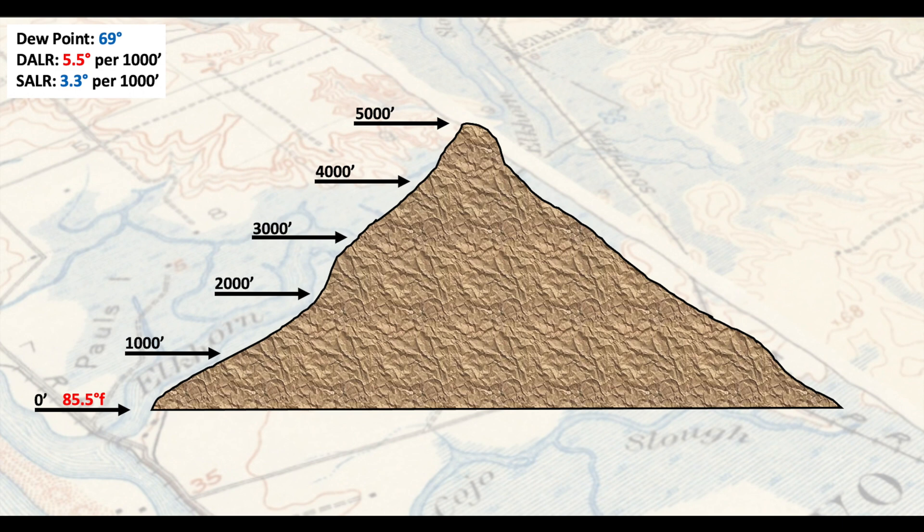The first thing we can observe in this diagram is a mountain with elevation markings. We can see a temperature at sea level — at zero feet — of 85.5 degrees Fahrenheit, and this mountain goes up in intervals of 1,000 feet until we hit the peak at 5,000 feet.